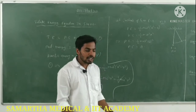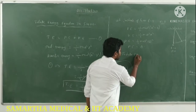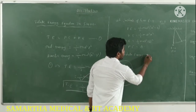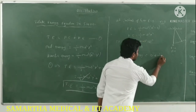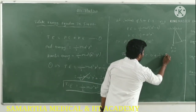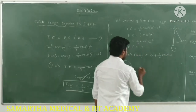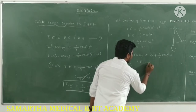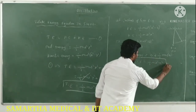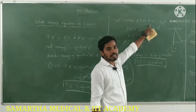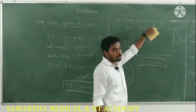The total energy at t = 0 (mean position) equals potential energy plus kinetic energy = 0 + ½mω²a² = ½mω²a². The displacement of the particle is 0 and the time taken is 0.